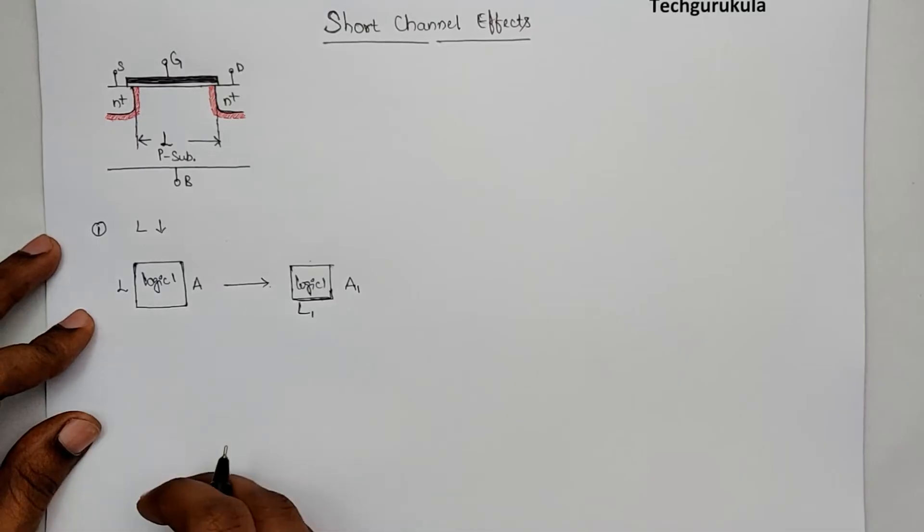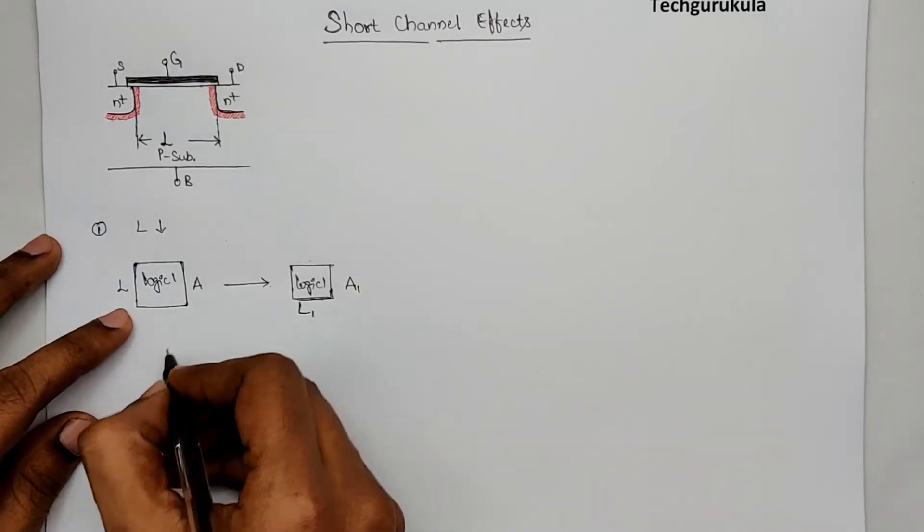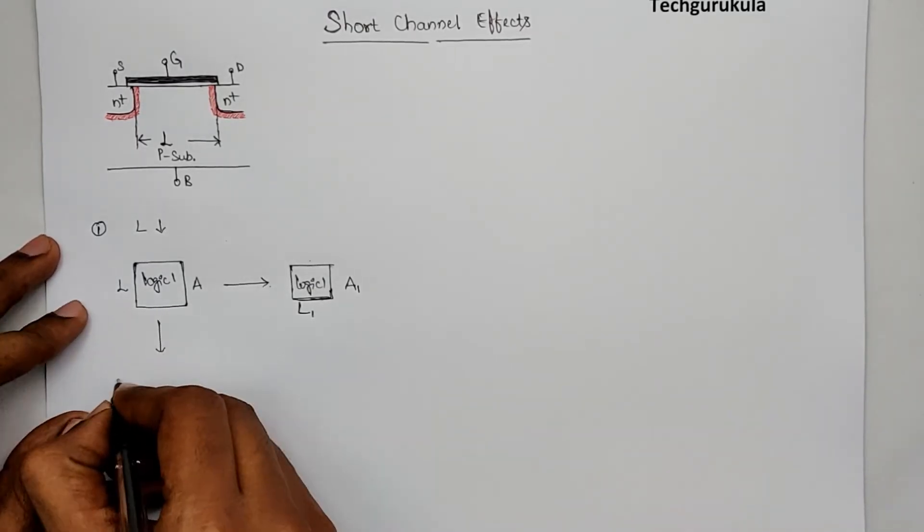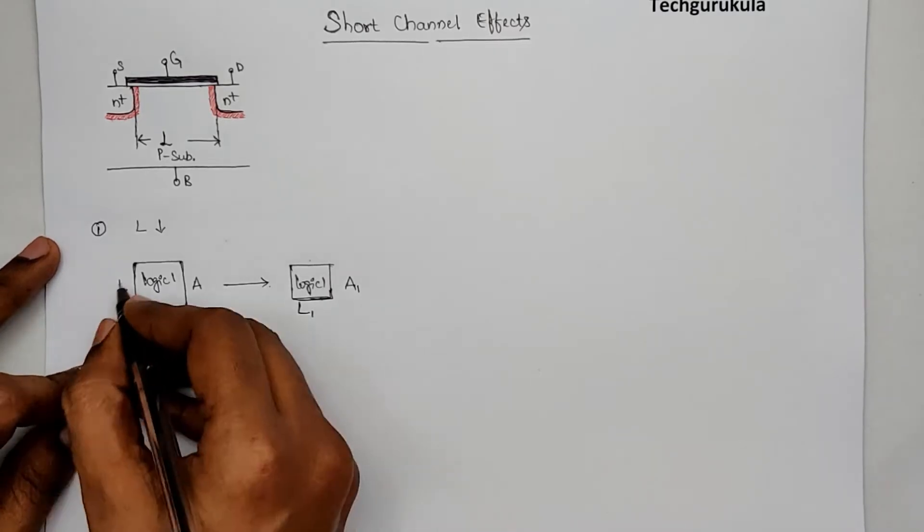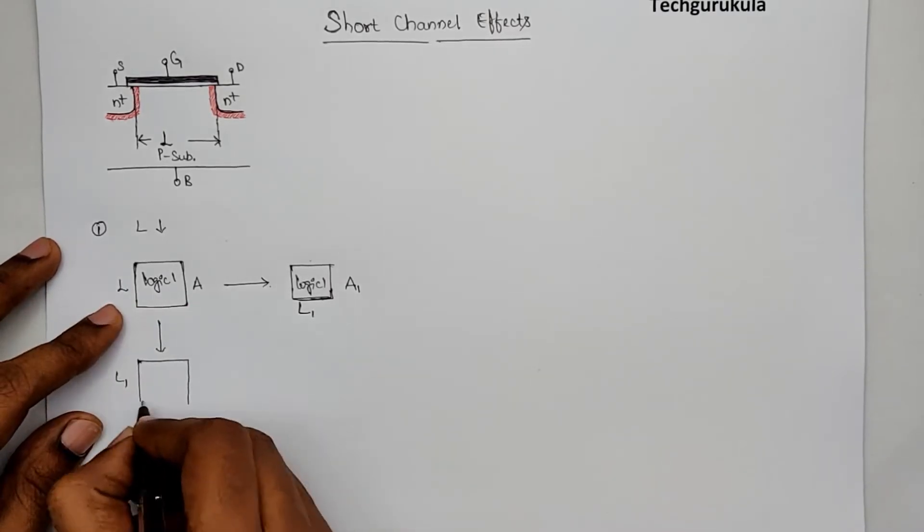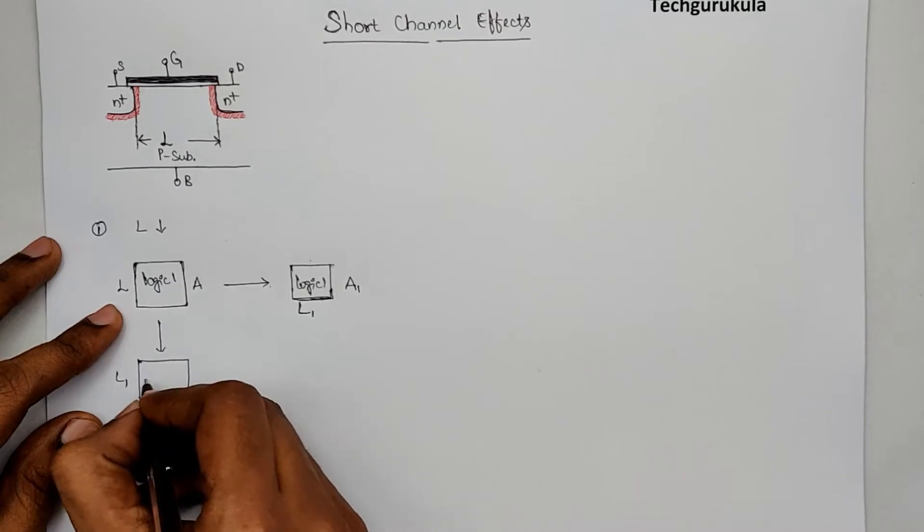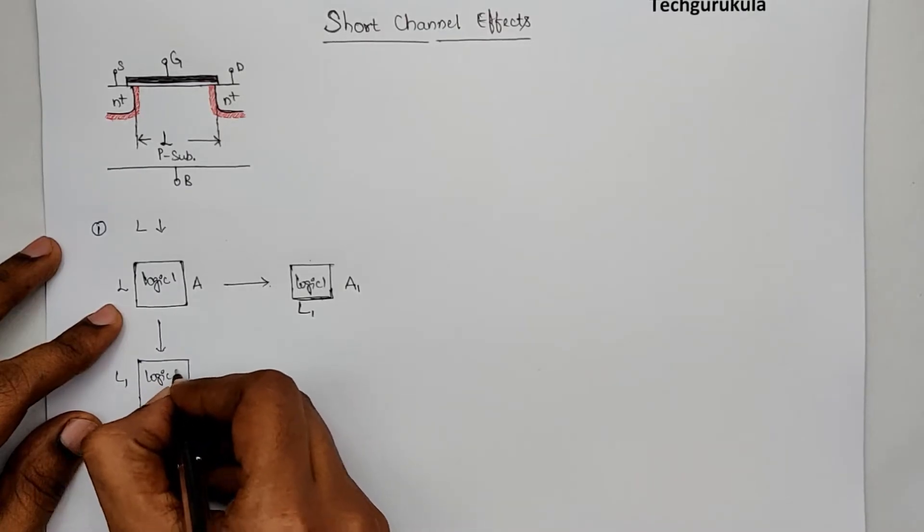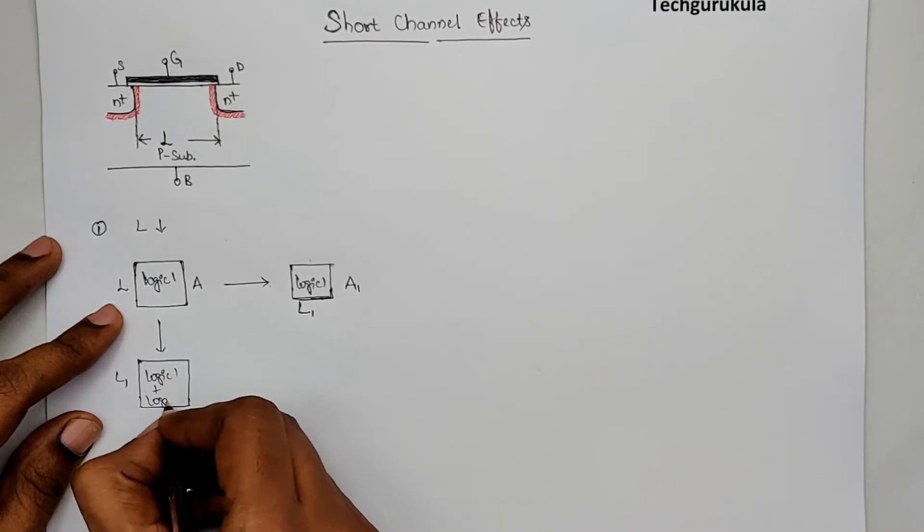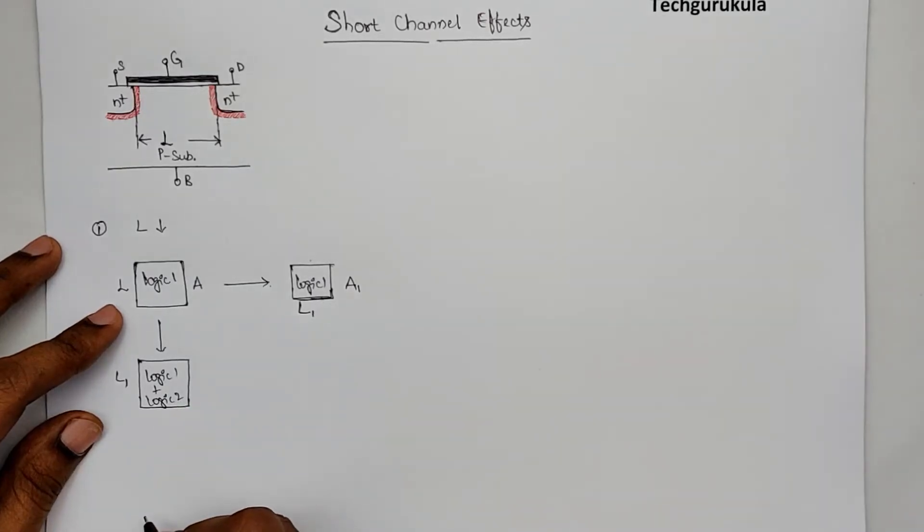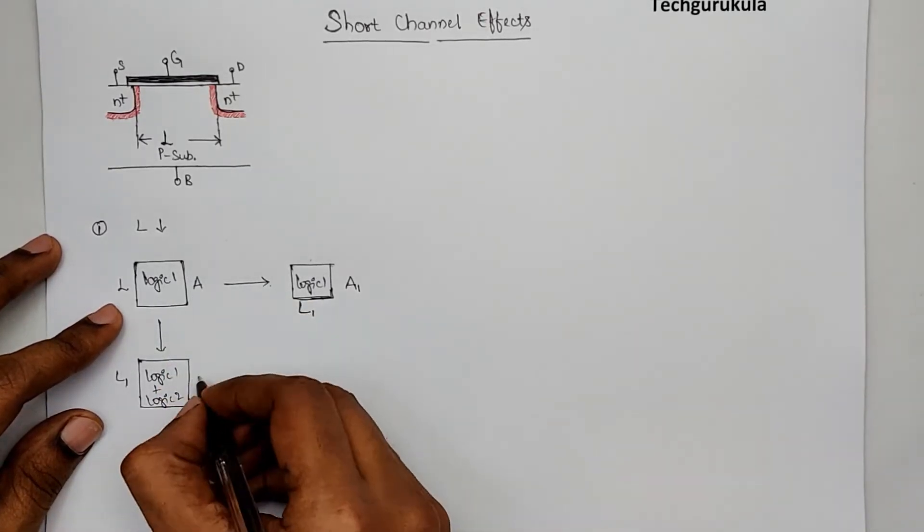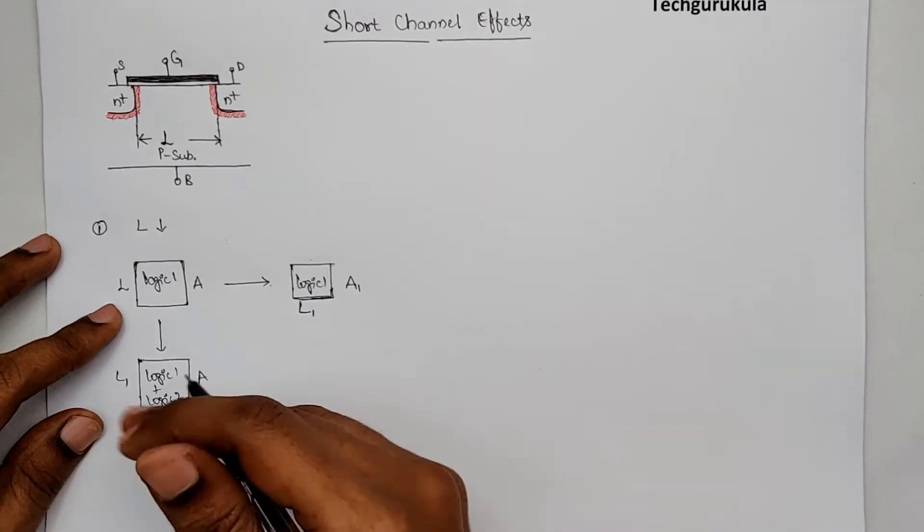Other way of seeing this is, if you take the same area, by changing the technology node to L1 from L, for the same area we can implement extra logic, logic 1 plus some other logic, logic 2. Which means, in the same area, we can actually implement more and more logic.